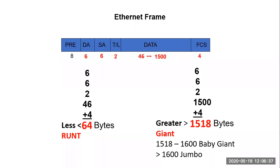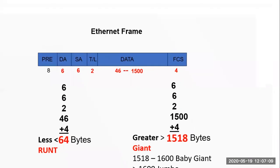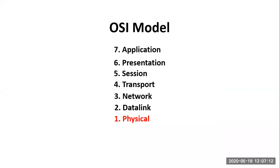Anything less than 64 bytes would be considered a runt, which comes from poor segmentation or collisions. At the other extreme, six plus six plus two plus 1500 plus four gives you 1518, which is the largest accepted Ethernet frame. Anything greater would be considered a giant. For those familiar with Cisco tests, if it's between 1518 and 1600, we call it a baby giant compared to a jumbo giant — some real-world terminology compared to Cisco test terminology.